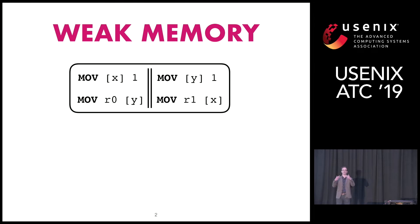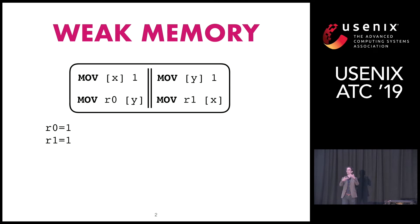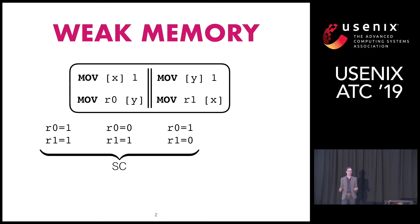To answer that question, you might start imagining all of the possible interleavings of these four instructions. One possibility is that both stores happen first and then the loads — if that happens, you end up with one, one in those two local registers. Another possibility is the left-hand thread finishes before the right-hand thread starts, giving you zero, one. And if the right-hand thread finishes first, you get one, zero. All other interleavings give rise to one of those three outcomes. This interleaving model of concurrency is called sequential consistency, or SC — a nice simple way to think about concurrent programmes.